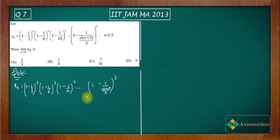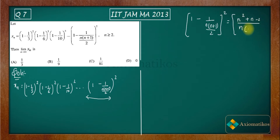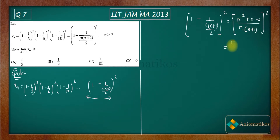The first step is to decode the general term. We have n(n+1)/2 whole squared. Taking the LCM on the numerator part, you get n² + n. So the expression inside becomes (n² + n - 2) divided by n(n+1). Now I will try to factorize the numerator n² + n - 2.